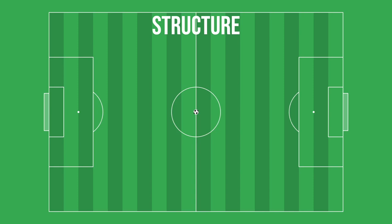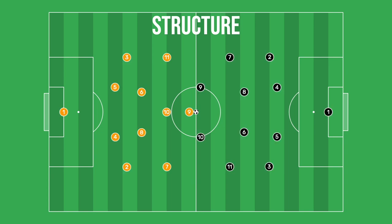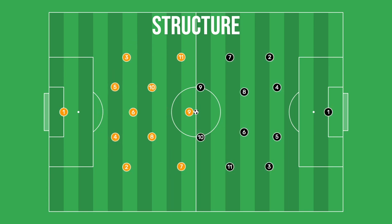The structure of a team is typically represented by a series of three or four numbers — 4-2-3-1, 3-4-3, 4-3-3, and so on. And while structure is defined by the organization of players on the field, describing the structure of a team in a meaningful way requires more context.